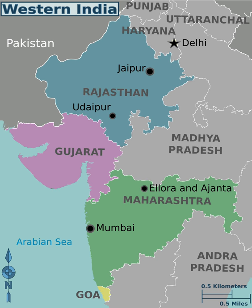In ancient history, Western India was divided into three great states according to Xuanzang: Sindh, which comprised the whole valley of the Indus from the Punjab to the sea, including the delta and the island of Kutch; Gurjara, which comprised Western Rajputana and the Indian desert; and Valabhi, which comprised the peninsula of Gujarat with a small portion of the adjacent coast. Before the partition of India, the now Pakistani territories of Sindh and Baluchistan were also included in this region.